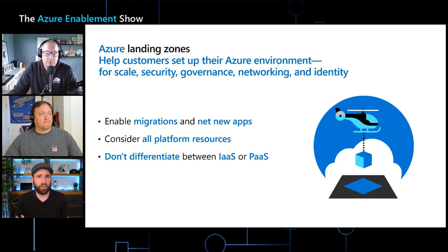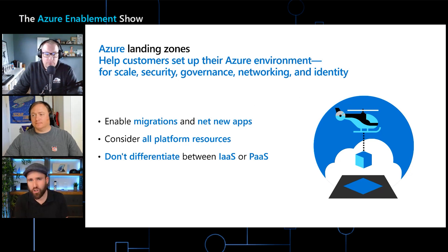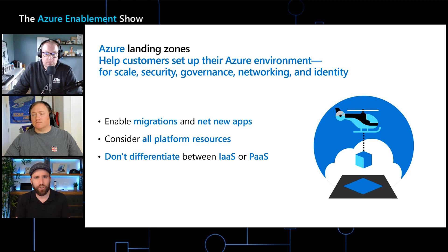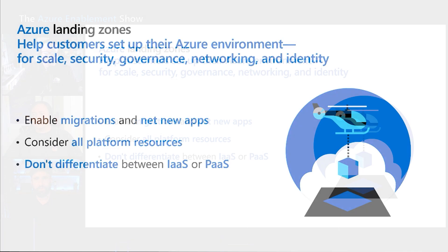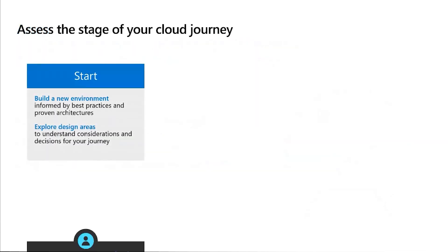Customers are usually in different states. We have customers who are probably just getting started, so they can have a greenfield approach. But then we have customers who are already working with Azure and already have resources deployed in Azure. We think about it in three core customer types when we talk about where they are on their journey. To start with, we have the Start customer, which is that greenfield type who is beginning their journey.